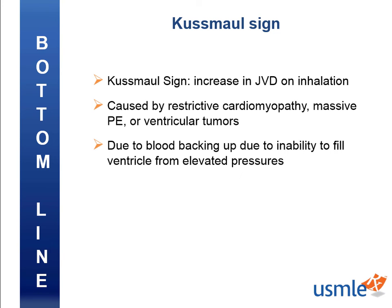All right, let's recap. Kussmaul's sign is an increase in JVD on inhalation. Remember that during normal inspiration, JVD should go down because we've decreased intrathoracic pressure. Kussmaul's sign can be caused by conditions such as restrictive cardiomyopathies, massive PE, ventricular tumors — anything that impairs RV filling. In normal respiration, the intrathoracic pressure decreases, causing increased blood flow to the heart. But in Kussmaul's sign, there's a condition that reverses this.